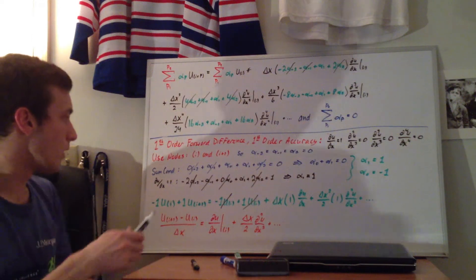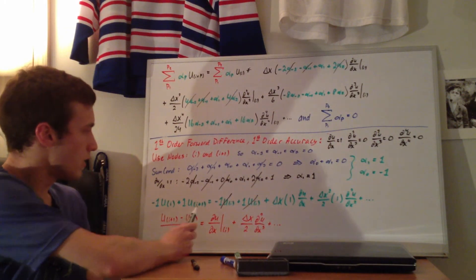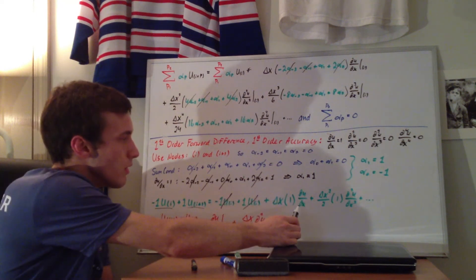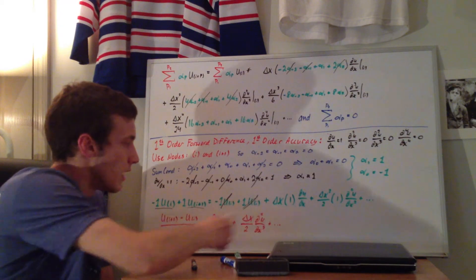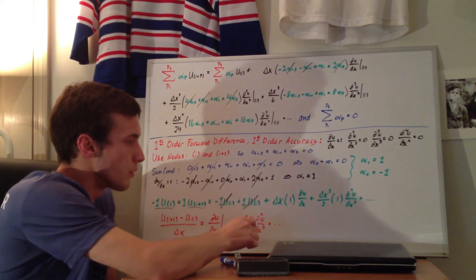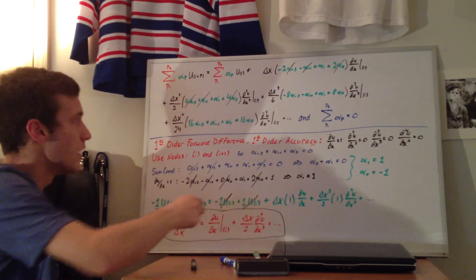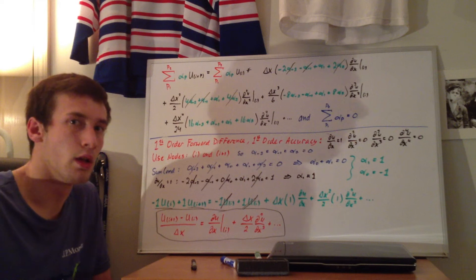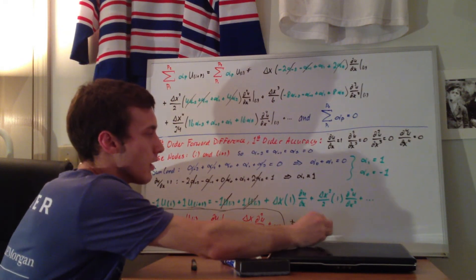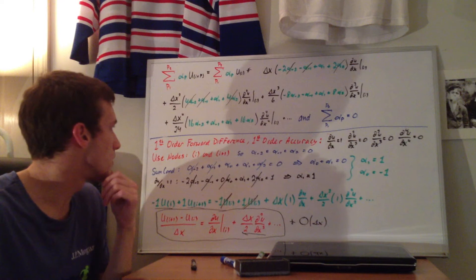Rearranging — I've put it in the standard form — we have (u_{i+1} - u_i) / delta_x = (du/dx)|_i + (delta_x / 2)·(d²u/dx²)|_i + higher order terms. This is the first order forward, first order accurate finite difference equation. The truncation error is O(delta_x), which matches our result from the direct Taylor series derivation in the other video.